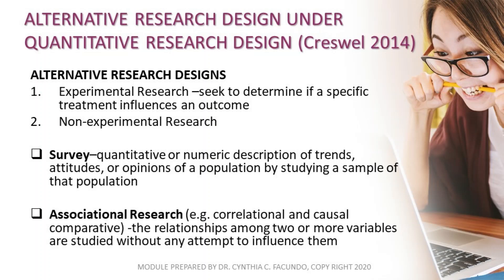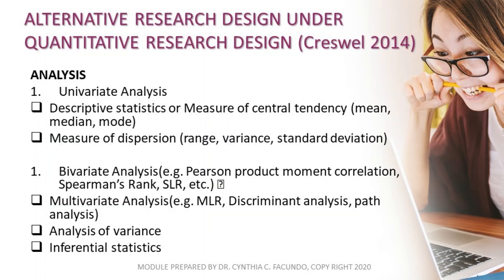The second type is non-experimental research, where we use a survey — a quantitative or numeric description of trends, attitudes, or opinions of a population by studying a sample of that population. Third, we have associational research, which includes correlational and causal-comparative designs, where the relationship among two or more variables are studied without any attempts to influence them.